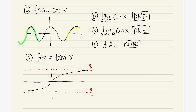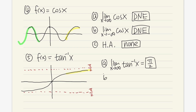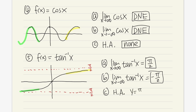If we have the limit as x approaching infinity of inverse tangent, this time we do have an answer. Because if x is going toward far right, we can see the curve is approaching π/2. Therefore, the answer is π/2. Similarly, the limit as x approaching negative infinity of inverse tangent is negative π/2, because as the curve goes far to the left, it approaches negative π/2. So we have two horizontal asymptotes: y = π/2 and y = negative π/2.